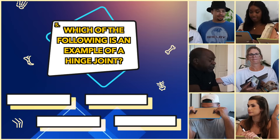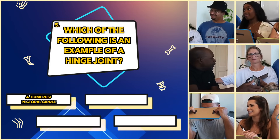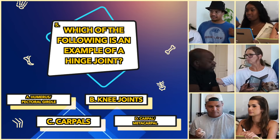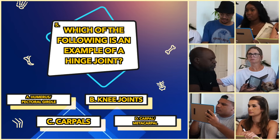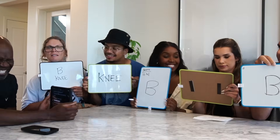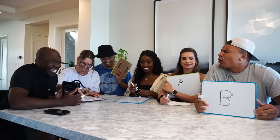Which of the following is an example of a hinge joint? A: between the humerus and the pectoral girdle. B: between the knee joints. C: between the carpals. D: between the carpal and the metacarpal. Because Sylvia said it out loud, that makes sense — I got that one. Maybe keep your answers to yourself during the test.